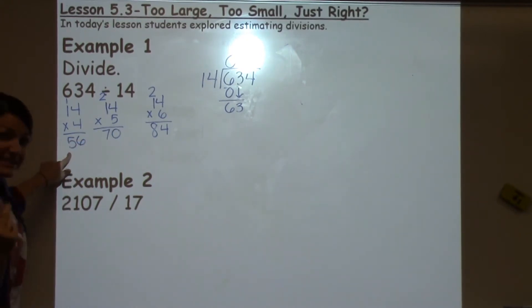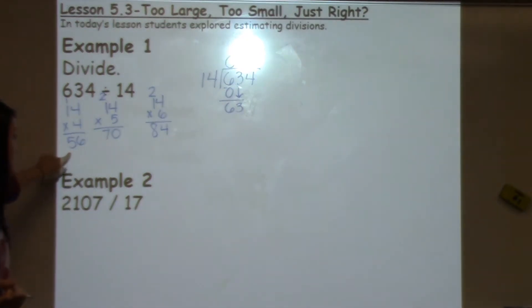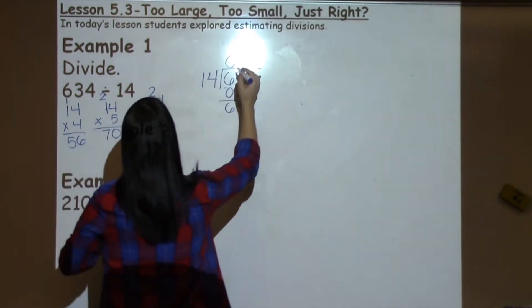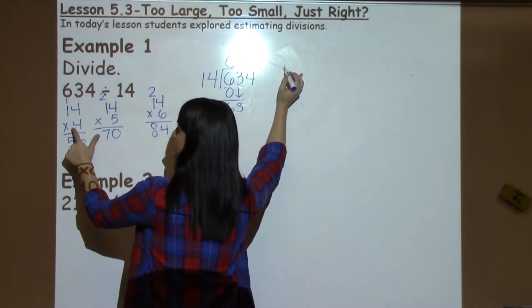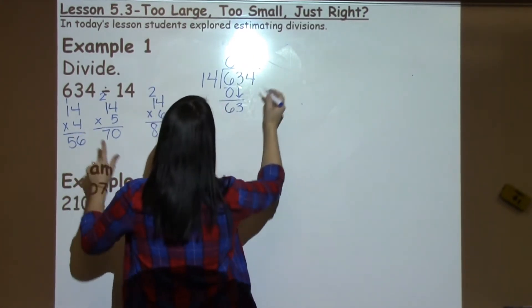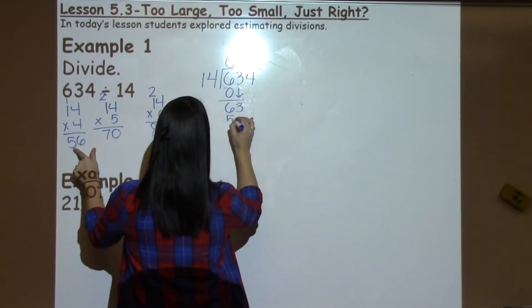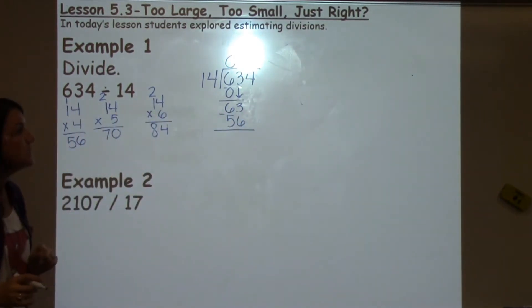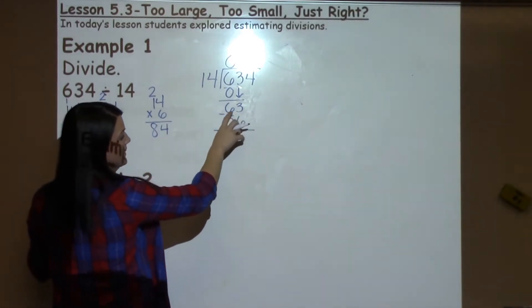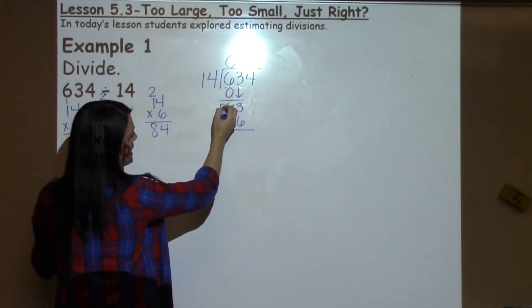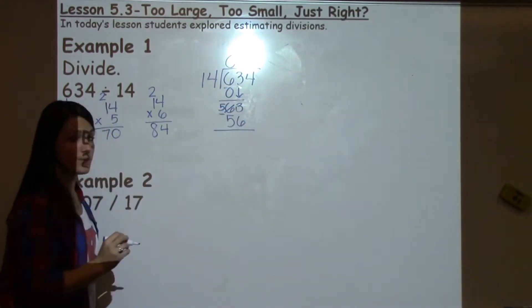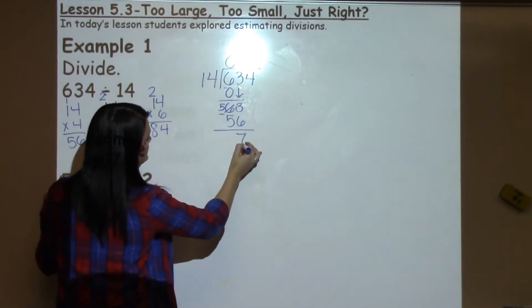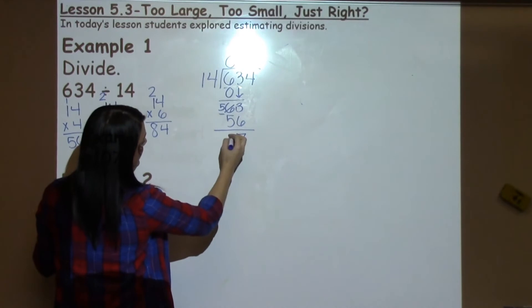So the next one is 14 times 4: 4 times 4 is 16, carry the 1; 4 times 1 is 4 plus 1 is 5 — giving 56. That doesn't get exactly 63, but it gets as close as possible without going over to 70. So place a 4 on top. We already know that's 56, and now we subtract. We can't take 3 minus 6, so borrow from the 6, making it 13. 13 minus 6 is 7, and 5 minus 5 is 0.